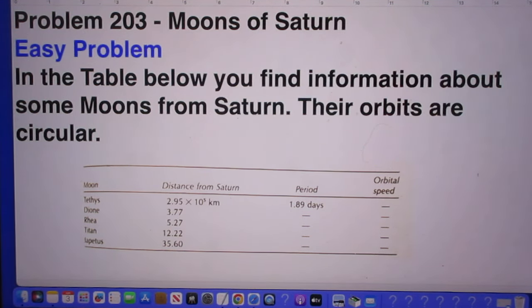In the table below, you find information about some moons of Saturn. And you may assume here that their orbits are circular.